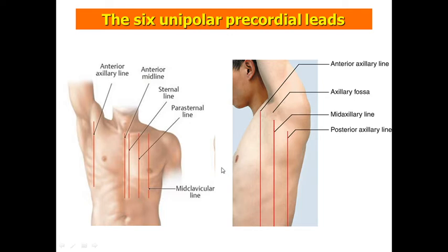We also have to connect chest leads. Before placing chest leads, I'd like to remind you of the chest lines. You see here the anterior middle line, which divides our sternum into two parts. We also recognize the sternum line, which runs along the border of the sternum. We know the mid-clavicular line, which divides our clavicle into two parts. Between the mid-clavicular line and sternum line, we recognize the para-sternal line. We also know three axillary lines: anterior, middle, and posterior axillary lines.